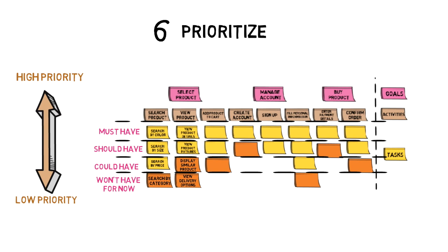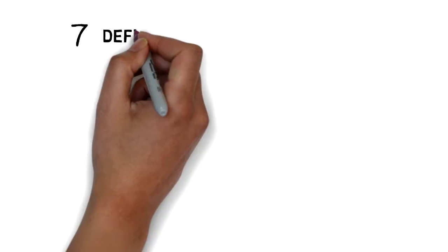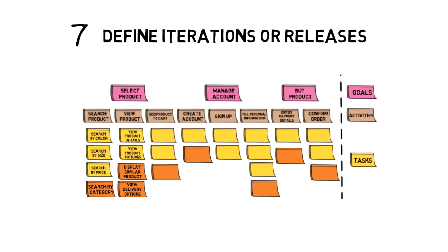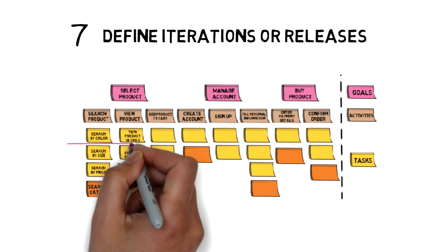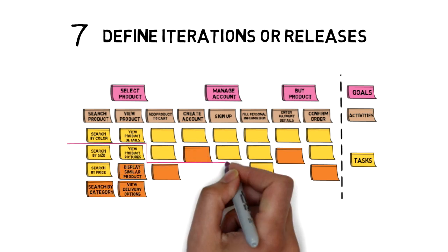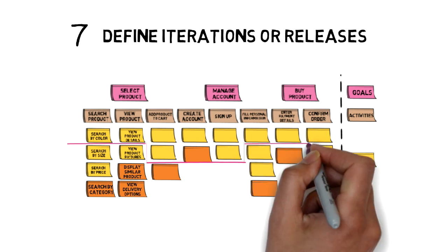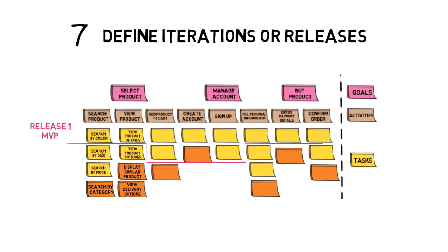Now you have created your user story map, prioritized vertically with a lot of tasks that you can translate into user stories — this is the starting point for your product backlog. You should now be able to define iterations or releases of the story map. You can first think about what is the minimum viable product; this should be part of your first release. Then, depending on the next priorities, you can define your second release, third one, and so on.